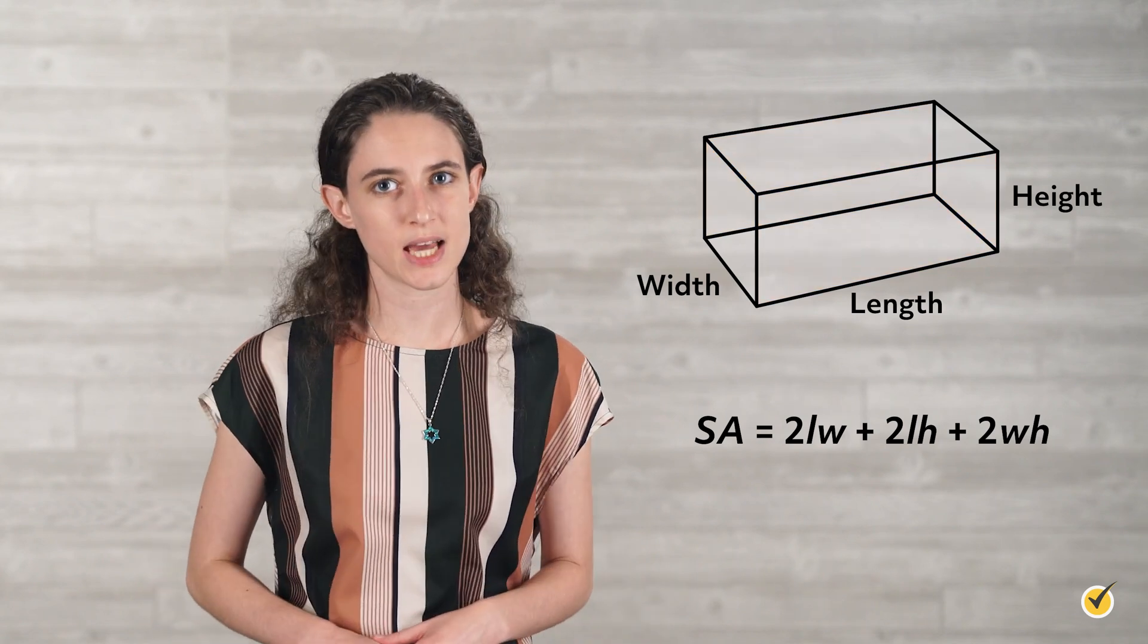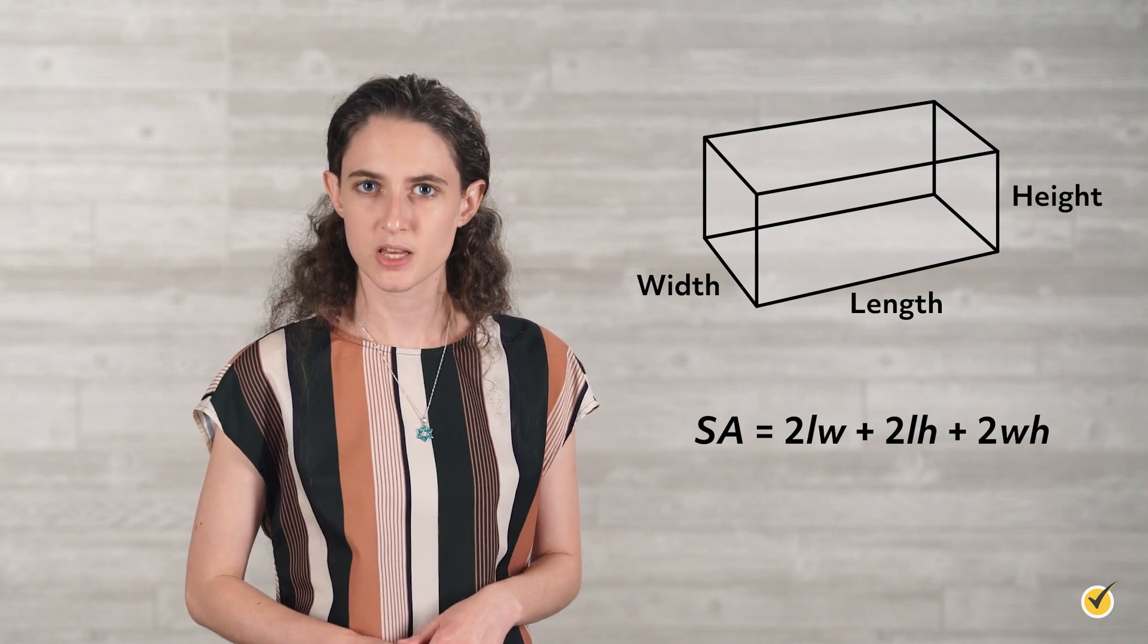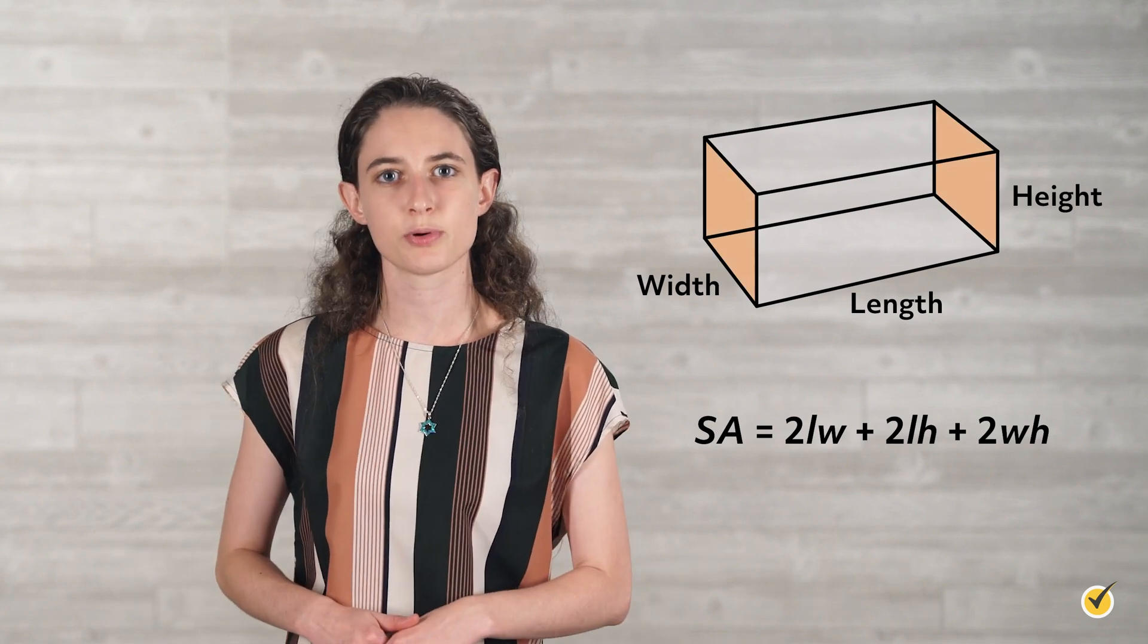The final term, 2 times width times height, is double the width times the height. In other words, the left and right sides of the prism.